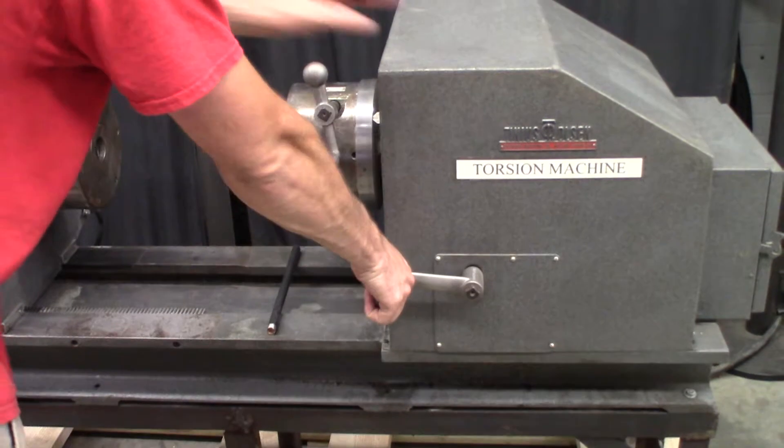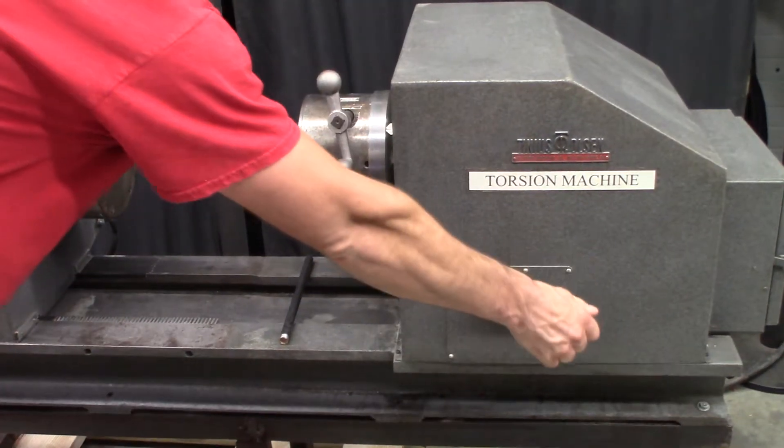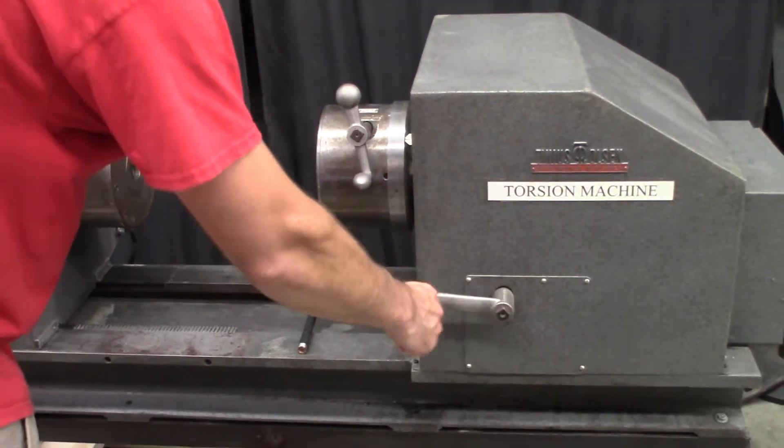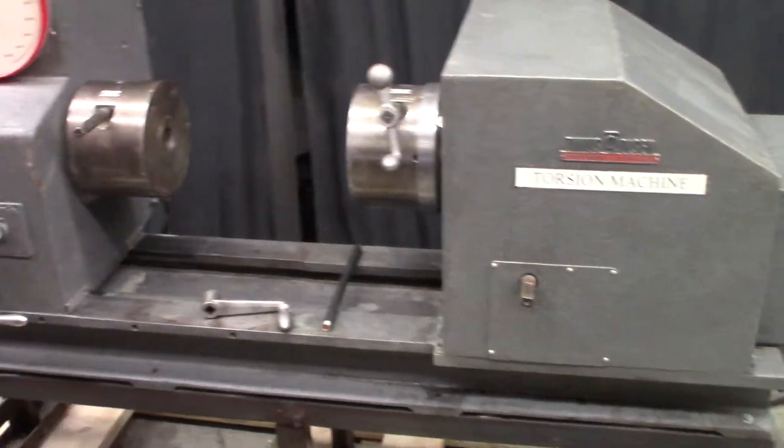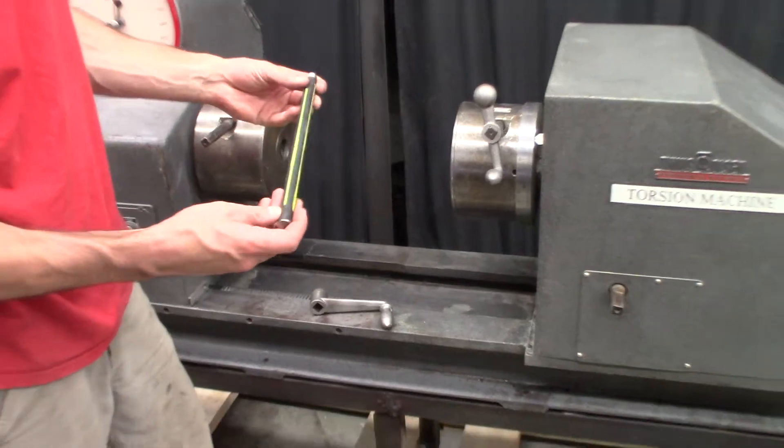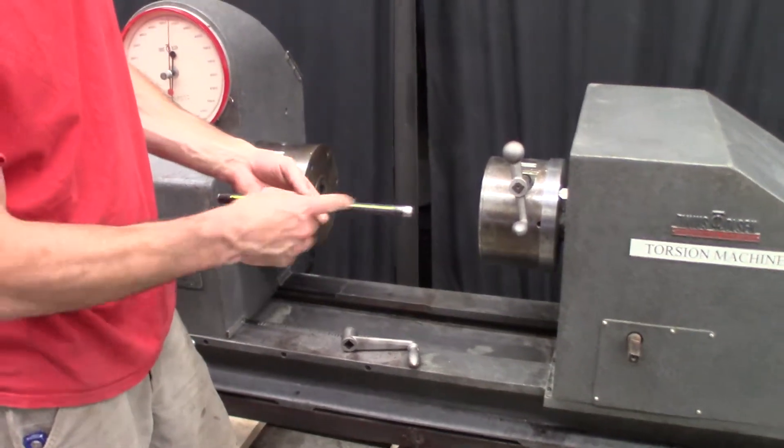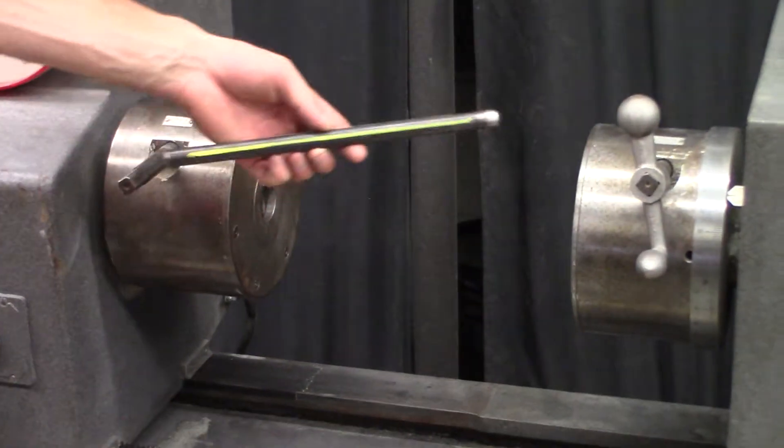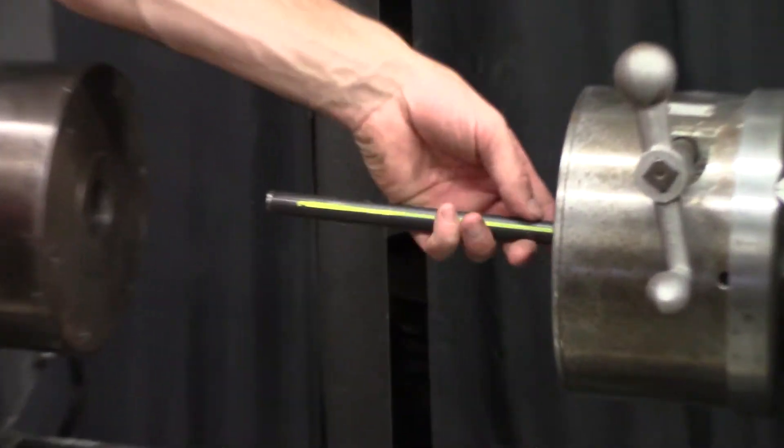So we'll go ahead and mount up, we're just going to use a 5/8 rod, and we drew some lines on it just so you can see it twist. So we'll go ahead and put it in this chuck first.